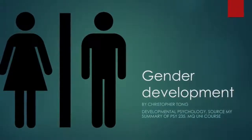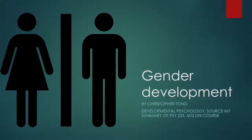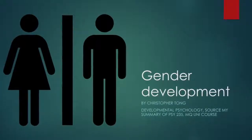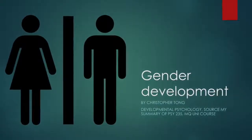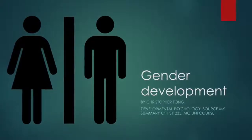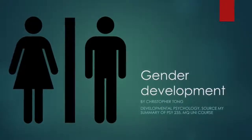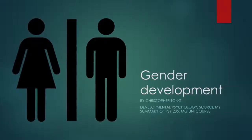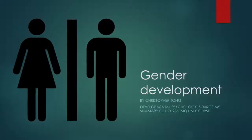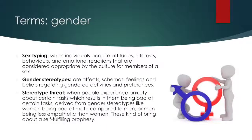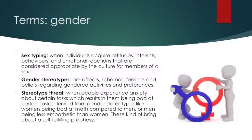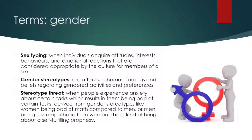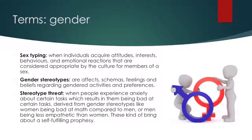Things to consider include biological differences such as the difference in hormones, chromosomes, and physiology, as well as cognitive and behavioral differences, which encompasses gender identity, gender roles, norms, typing, and stereotypes. Sex typing is when individuals acquire attitudes, interests, behaviors, and emotional reactions that are considered appropriate by the culture for members of a sex.